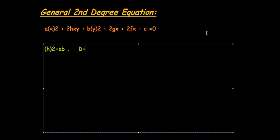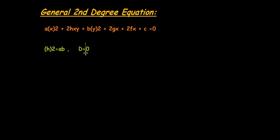Delta is not equal to 0. So for parabola, delta is not equal to 0. This equation represents an ellipse.